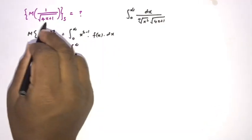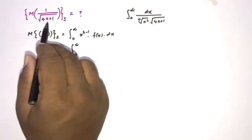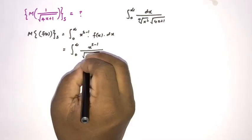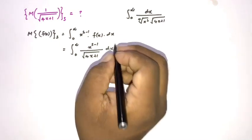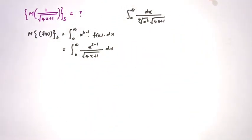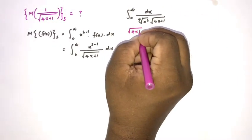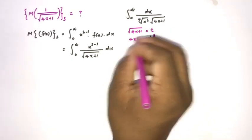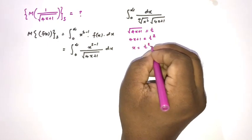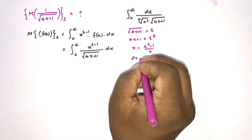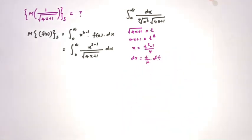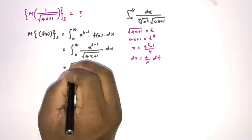In our question we have f(x) = 1 over square root of 4x plus 1. Therefore we can write the integral as x to the s minus 1 times 1 over square root of 4x plus 1, dx. To evaluate this integral, I am going to take a substitution: let square root of 4x plus 1 equal t. Squaring both sides gives 4x plus 1 equals t squared, so x equals t squared minus 1 over 4, and differentiating gives dx equals t over 2 dt.